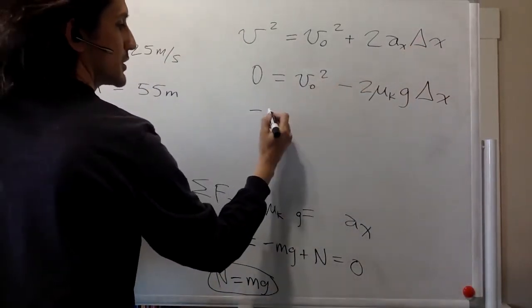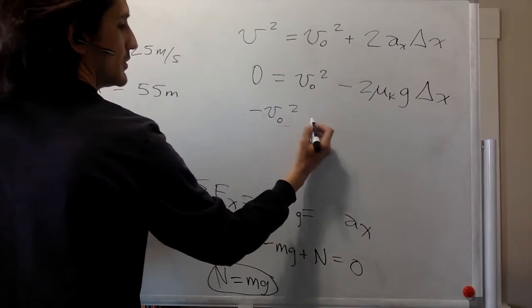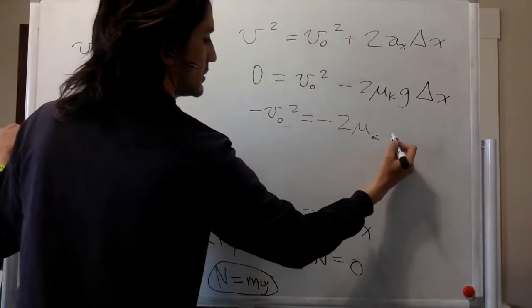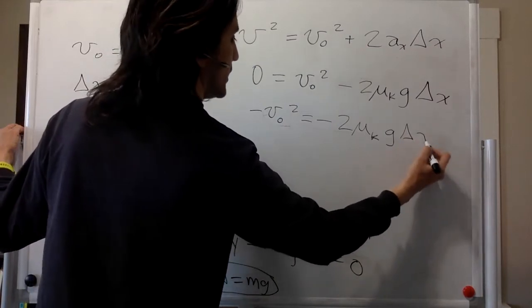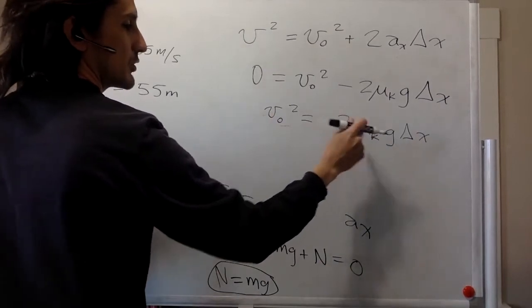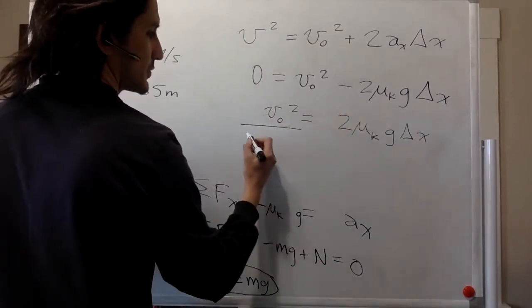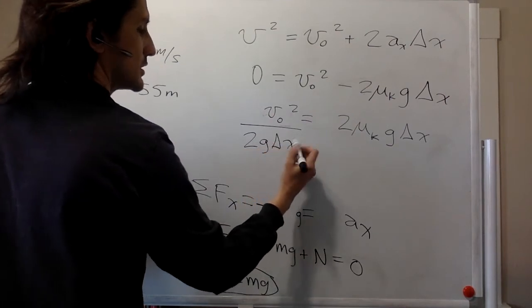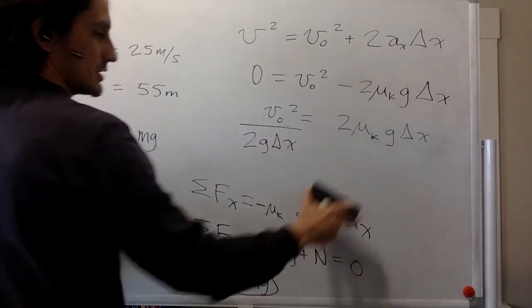So we move this one over here, negative. v naught squared equals negative 2 mu k g delta x. You can get rid of the negatives. And solve for mu. So divide by 2 g delta x. That's mu k.